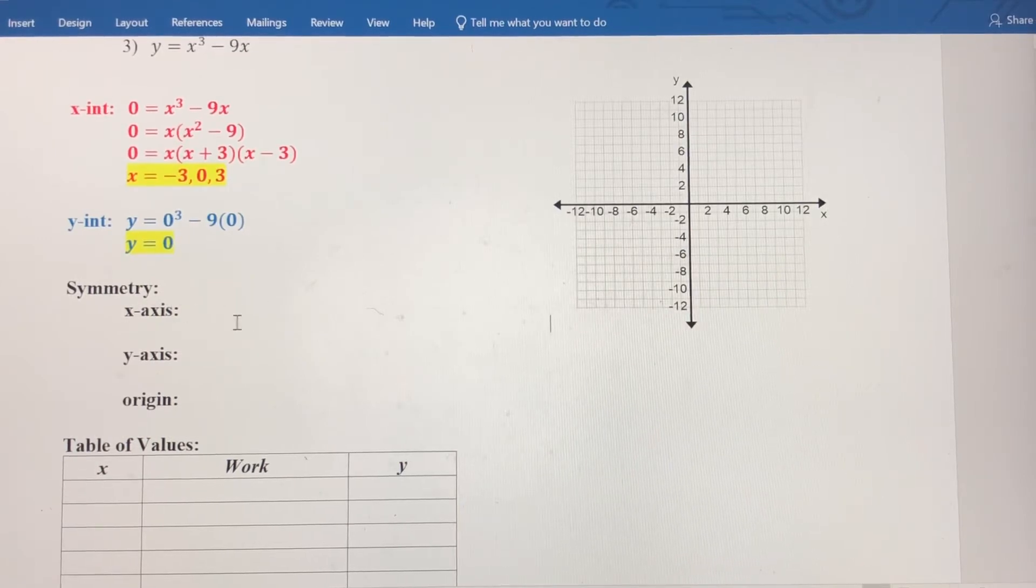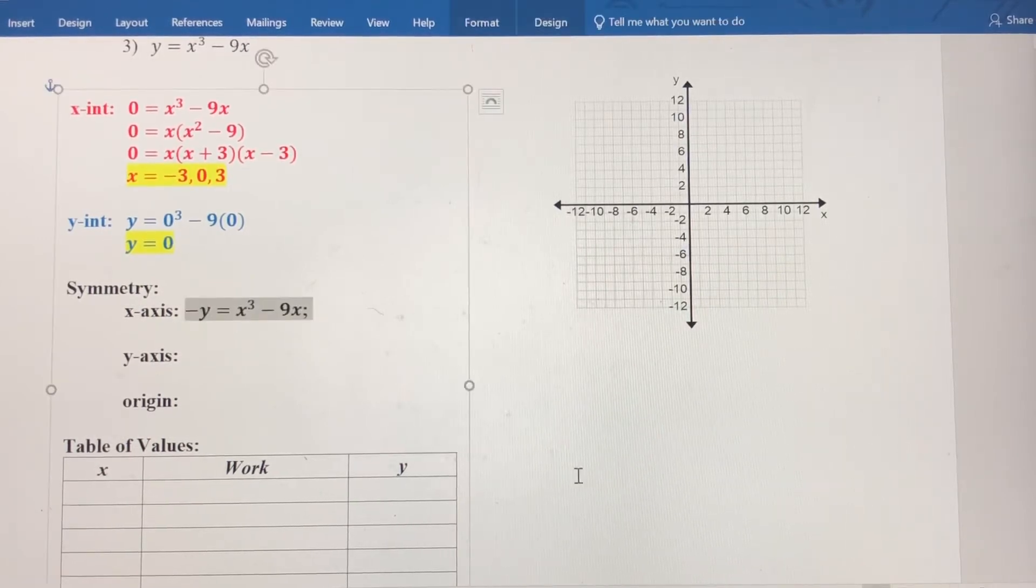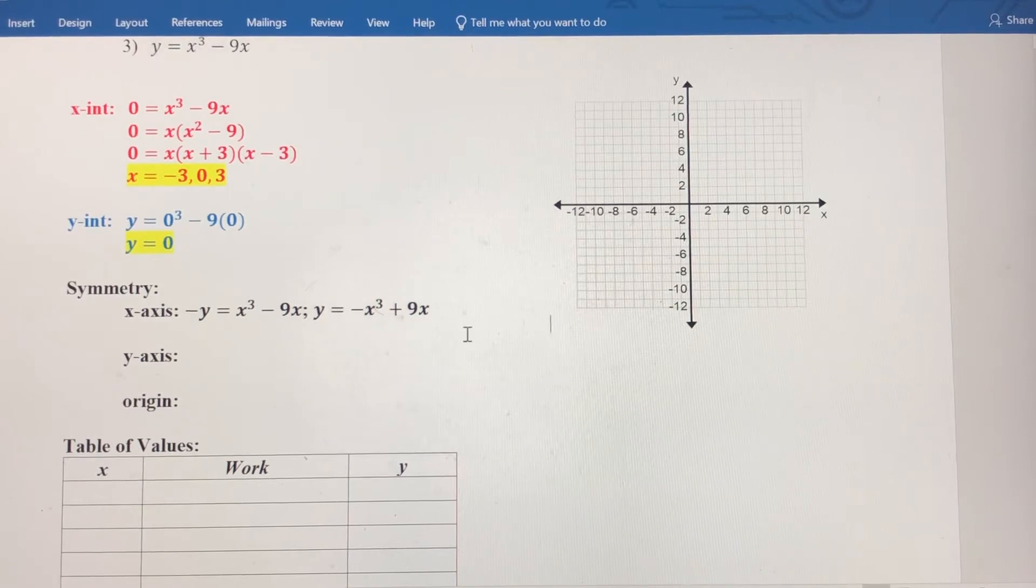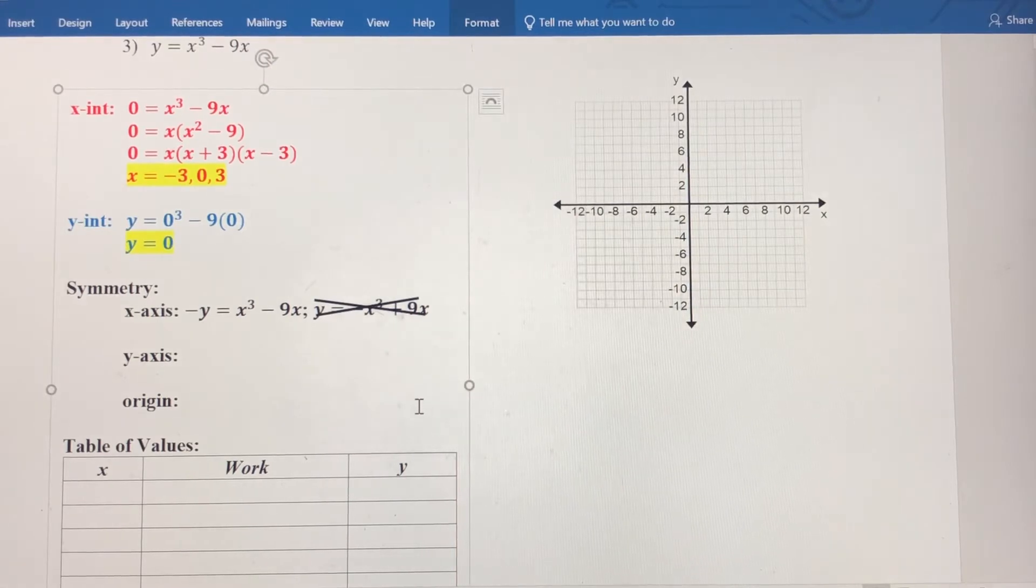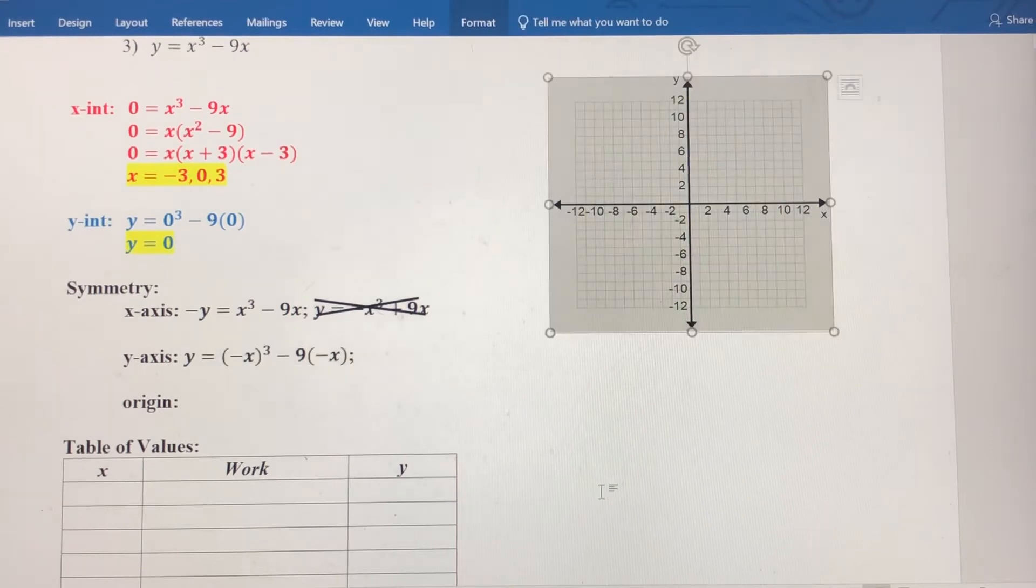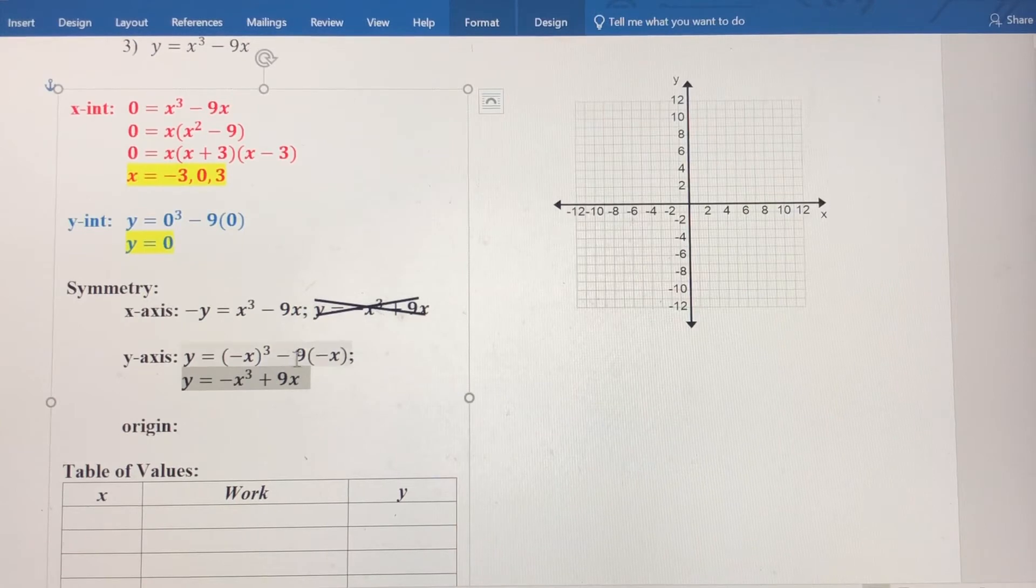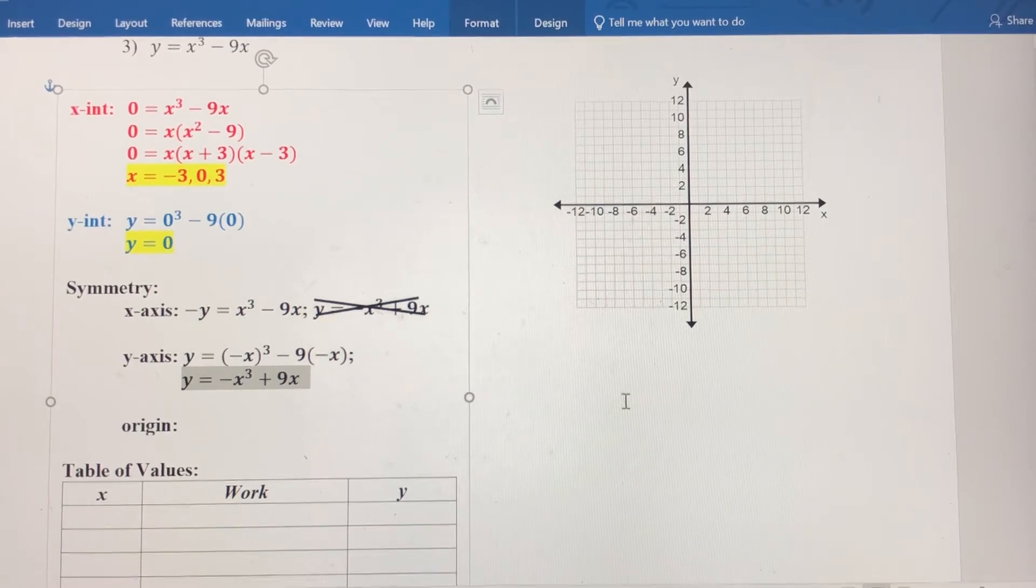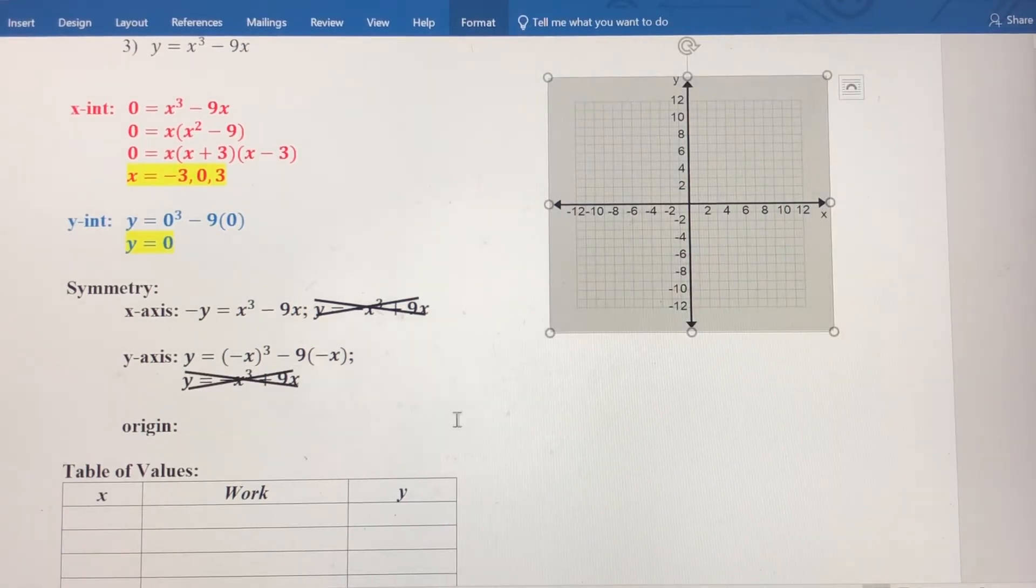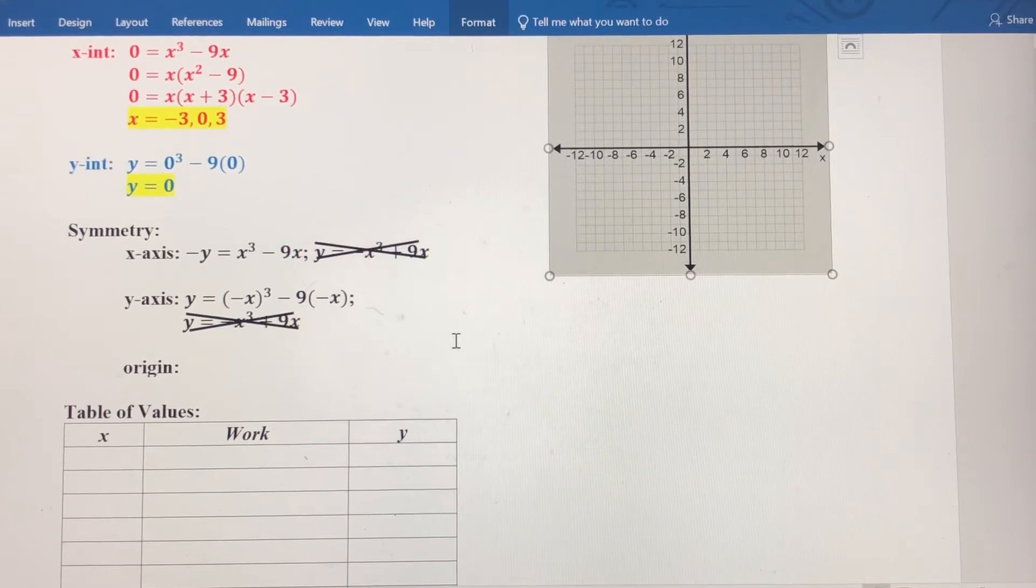Let's check symmetry. With the x-axis, remember we want to replace y with negative y. Let's go ahead and multiply everything by negative 1 because we want to solve for y, and notice this does not match up. This doesn't match, so there is no x-axis symmetry here. Let's check y-axis symmetry. We're going to replace both x's with negative x. Let's clean that up. When I cube a negative x, I end up with negative x cubed. When I multiply negative 9 times negative x, I get positive 9x. Again, notice this does not match, so this equation does not have y-axis symmetry.